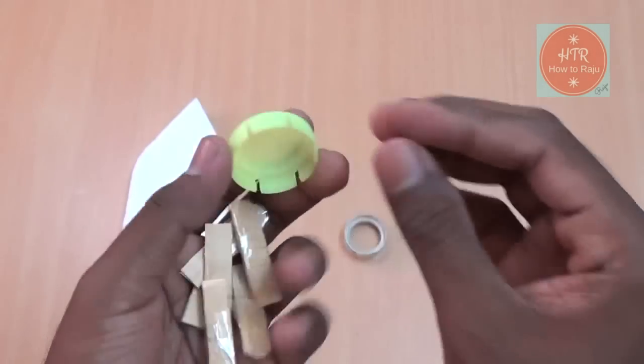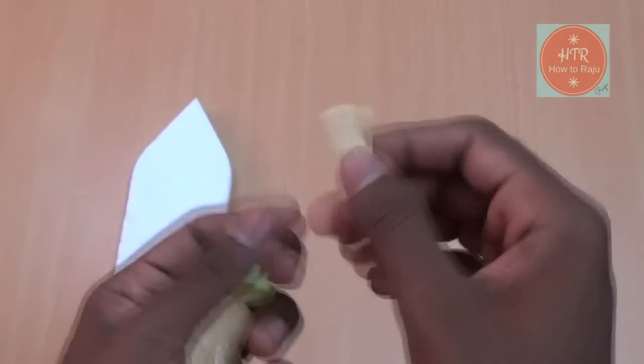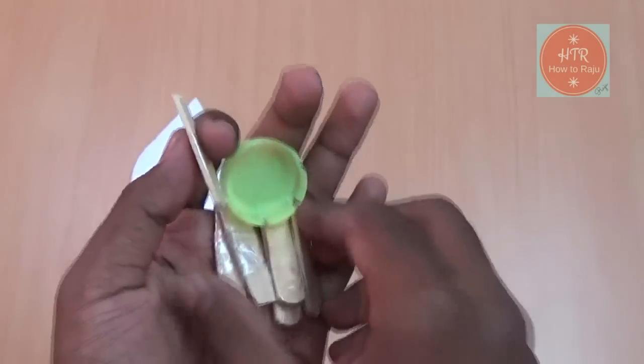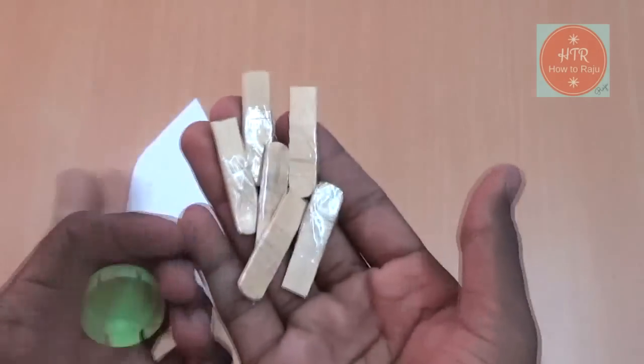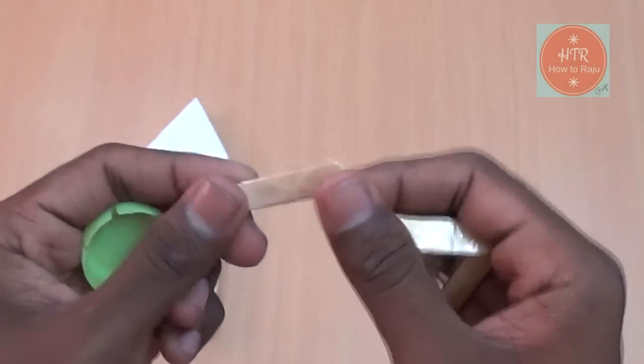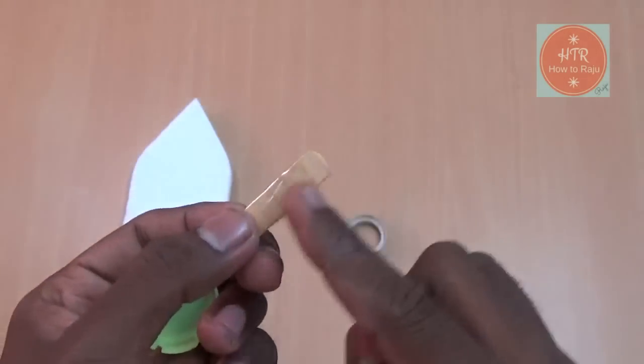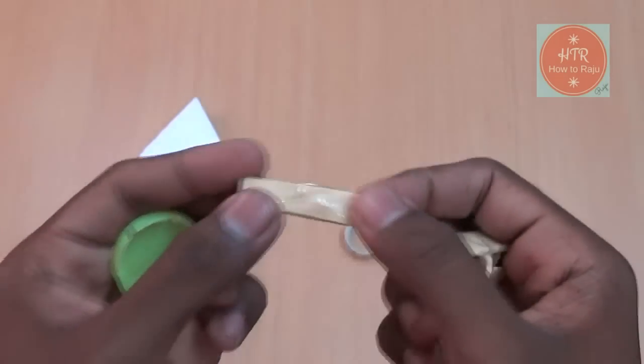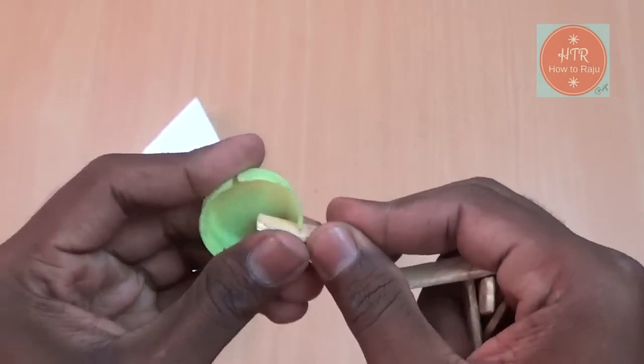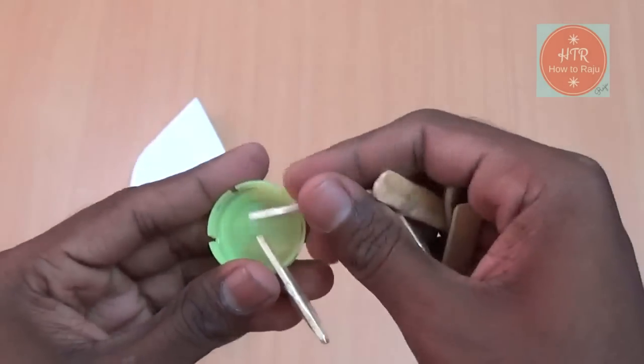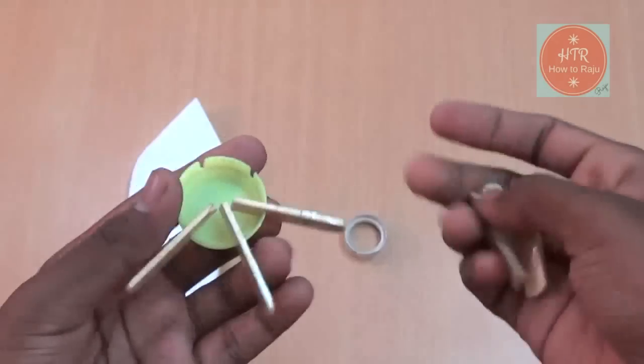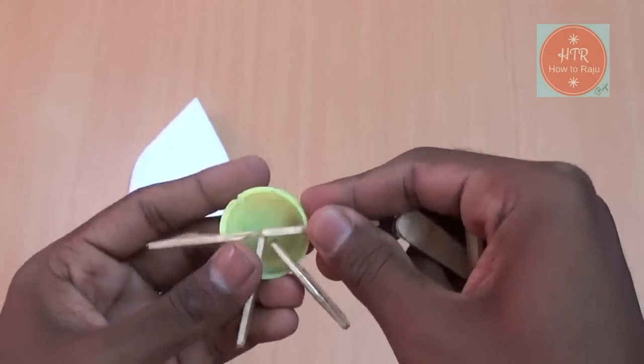Then take the ice cream sticks and cut four centimeter pieces, six pieces. Then tape it using the cellophane tape. It helps to avoid soak in the water. Then insert the sticks in the cap like this. Continuously watch closely.